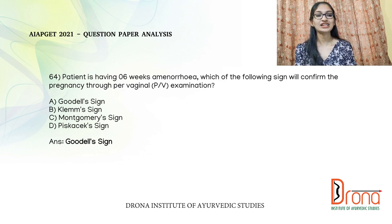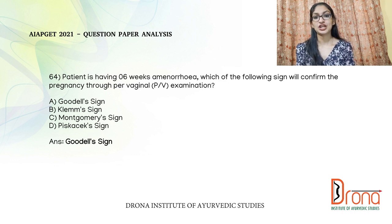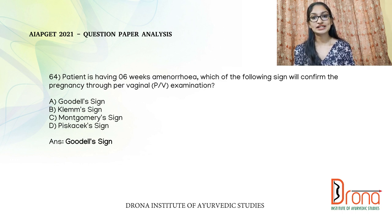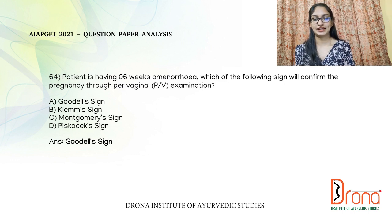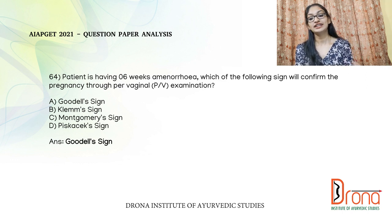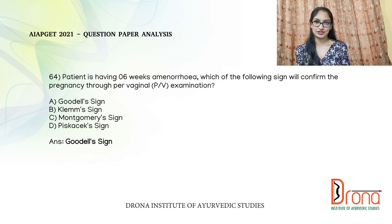The next question: a patient is having six weeks of amenorrhea — which of the following sign will confirm the pregnancy through per vaginal examination? Goodell's sign is due to increased vascularity; the cervix will become blue and soft to touch. At six weeks the patient is in the first trimester, and Goodell's sign is examined per vaginally, so the answer is Goodell's sign. The Piskacek sign is due to blastocyst implanting laterally causing asymmetrical uterine growth — this is not a per vaginal examination.